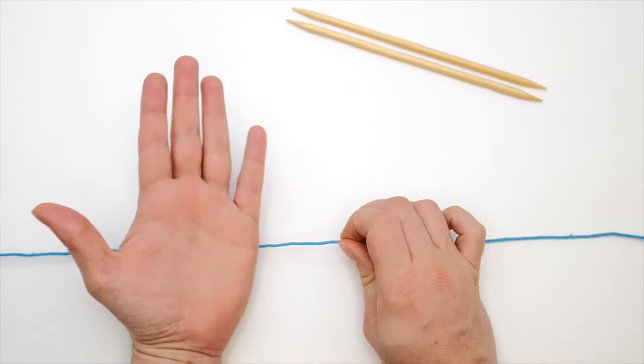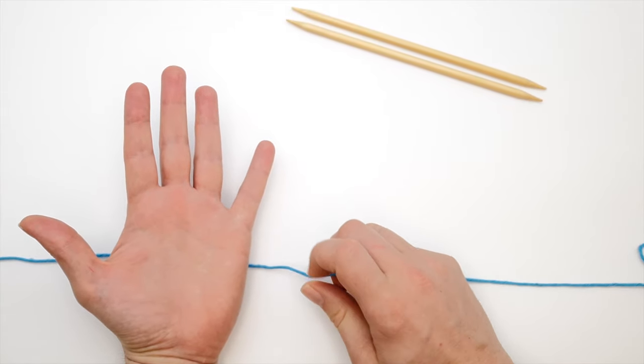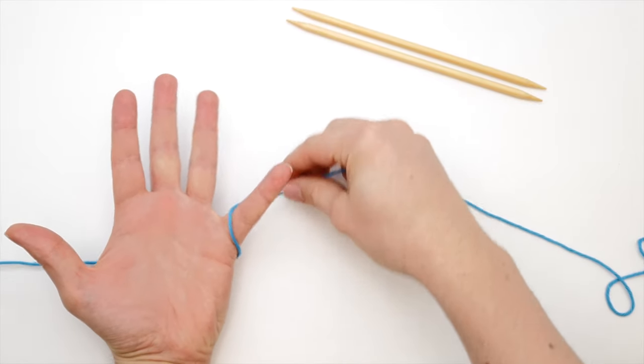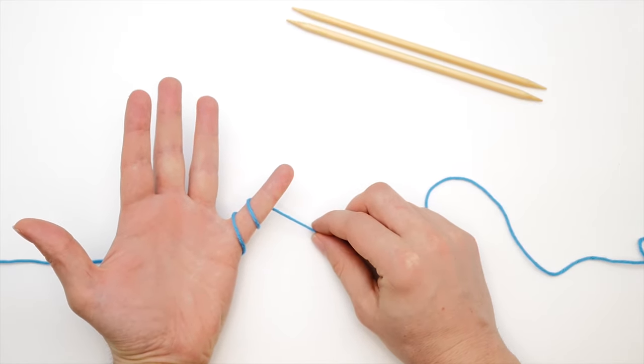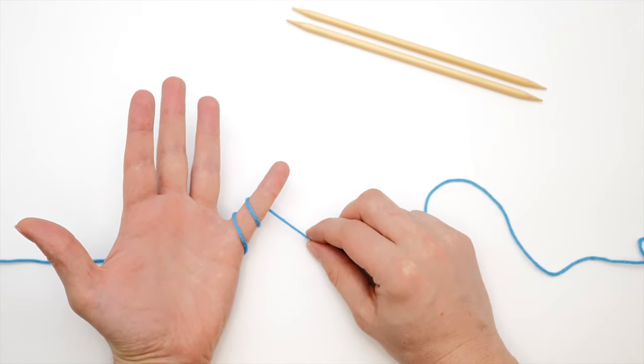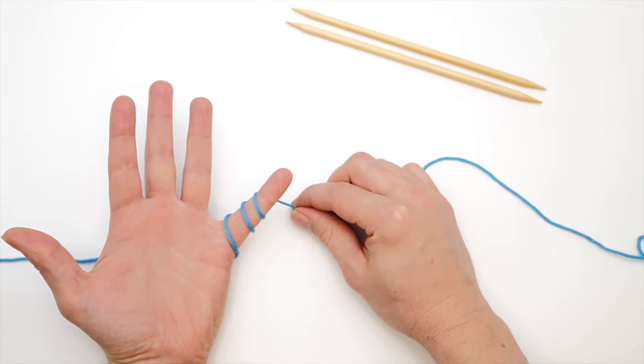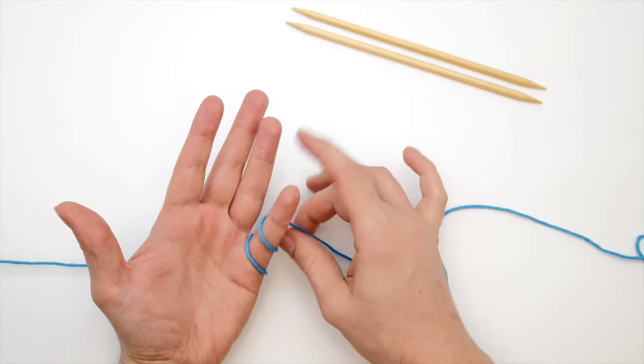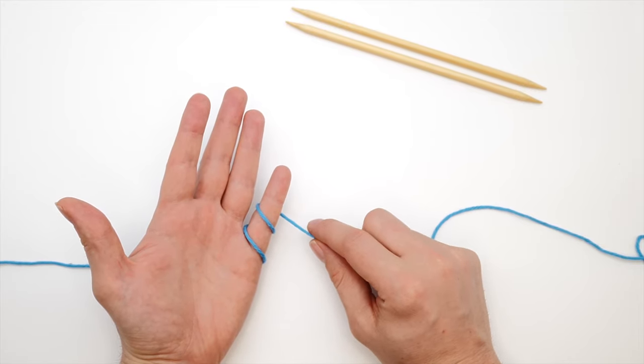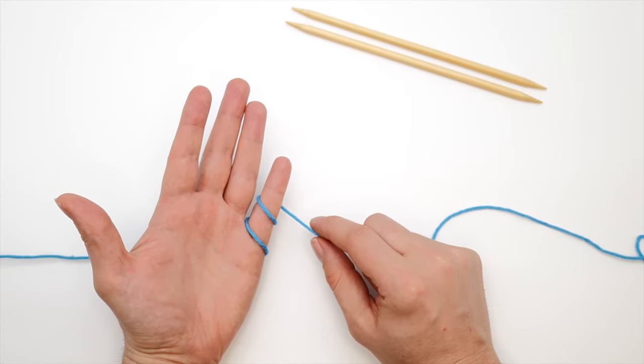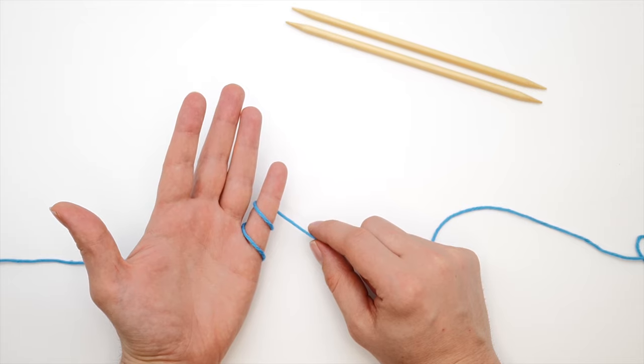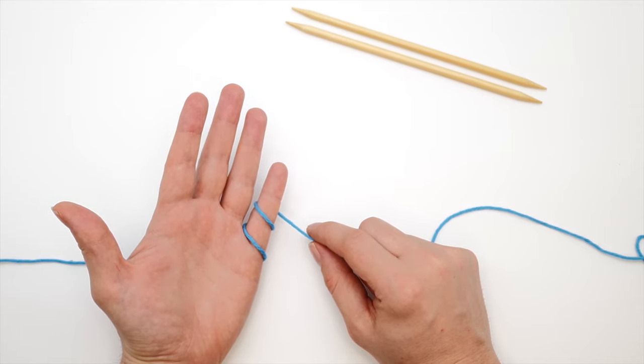Now wrap the yarn around your pinky finger clockwise twice. Once, twice. You can wrap it around three times as well. This will create more tension and if you just wrap it around once it will create less tension. Find out what works for you. For me, it's two times.